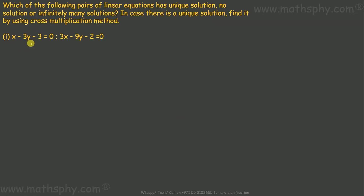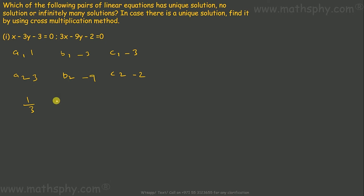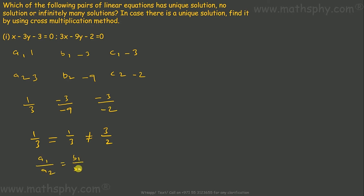The very first thing we need to do is find out whether they have a unique, no, or infinitely many solutions. So let's quickly find out the ratios. A1 is 1, A2 is 3, B1 is negative 3, B2 is negative 9, C1 is negative 3, and C2 is negative 2. So A1 over A2 is 1 over 3, B1 over B2 is negative 3 over negative 9 which is 1 over 3, and C1 over C2 is negative 3 over negative 2, which is 3 over 2. So A1/A2 equals B1/B2 but is not equal to C1/C2 — meaning no solution.